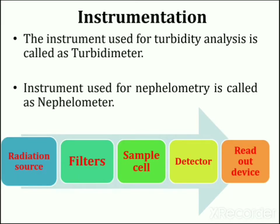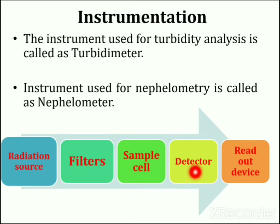Instrumentation: The instruments used in nephelometry and turbidometry are very similar to spectrophotometer devices. In both instruments, the various parts are arranged in the following manner: first, a radiation source, then filters, sample cell, detector, and readout device.